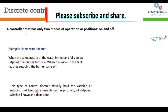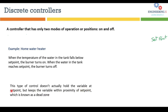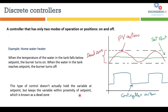This type of control does not actually hold the process variable at the set point but keeps it within the proximity of the set point, which is known as the dead zone. On the right-hand side picture, the green line represents the set point and the red oscillating line is the process variable oscillating across the set point. The blue line represents the controller action — only two steps: off, on, off, on, off.